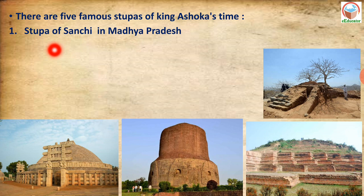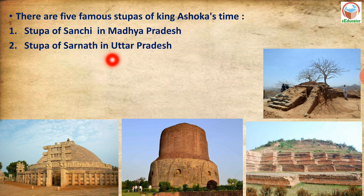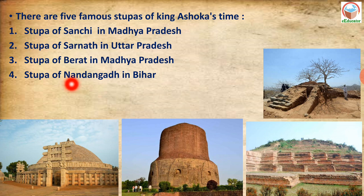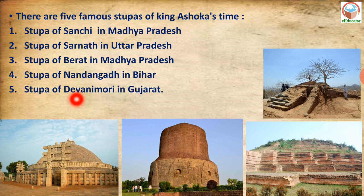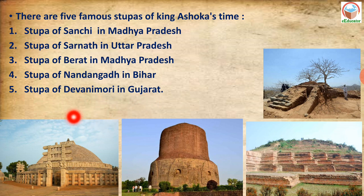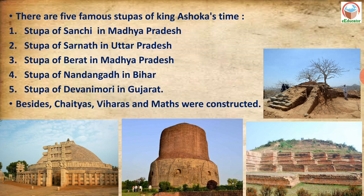The five major Stupas built during the time of King Ashoka, before the 3rd century BC, are: the Stupa of Sanchi in Madhya Pradesh, Stupa of Sarnath in Uttar Pradesh, Stupa of Berat in Madhya Pradesh, Stupa of Nandangarh in Bihar, and the Stupa of Devani Mori in Gujarat, located near the Ravali mountain hill area.